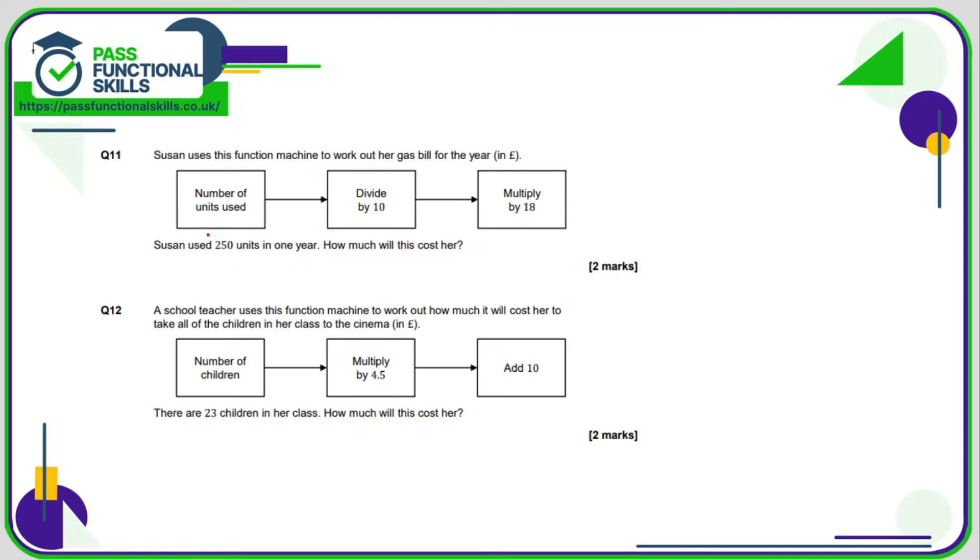Question number 11. Again we're just using the function machine, which is we're putting the number in, we're performing these functions, and what comes out the other side. So £250 is going in, it's going to be divided by 10, so that's going to take it down to 25. And then we need to multiply 25 by 18, and 25 times 18 is £450.